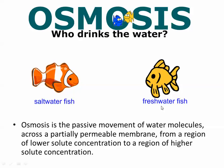A freshwater fish lives in water that is not as salty relative to the body of the fish, whereas a saltwater fish lives in water that is much more salty than its body. So water naturally diffuses from inside the saltwater fish out into the surrounding water — it loses water very quickly. A freshwater fish's body is more salty than the outside, so water diffuses inward — they're already getting plenty of water without drinking. That's why saltwater fish must constantly drink.